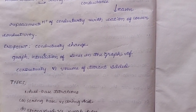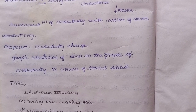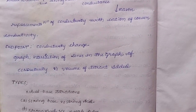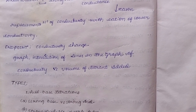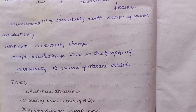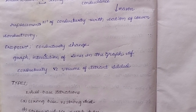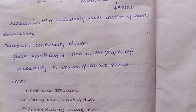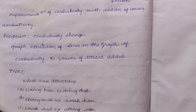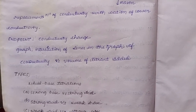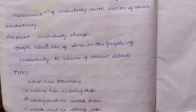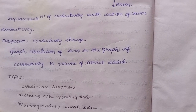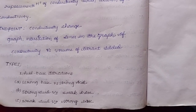The end point is determined from a graph. Graph-wise, the end point is the intersection of two lines on a graph of conductivity versus volume of titrant added. The two lines intersect at a point, and that intersection gives the end point. We add the titrant and observe where the lines intersect.